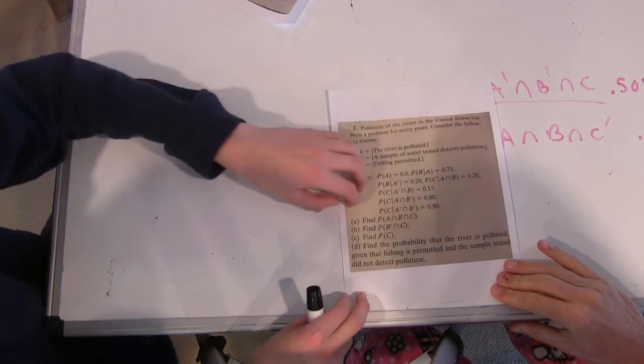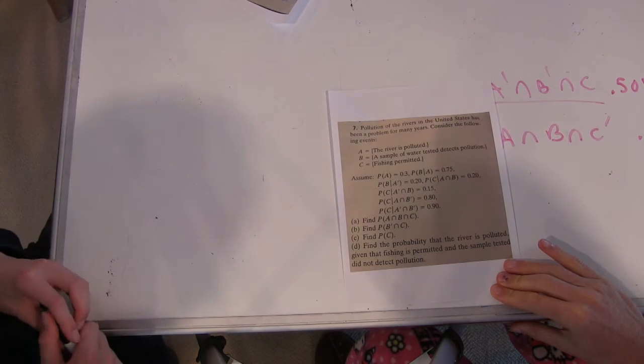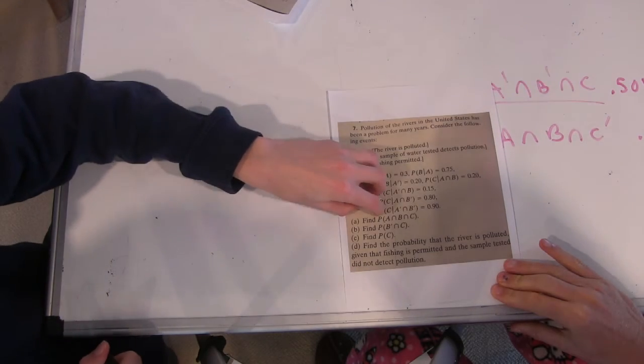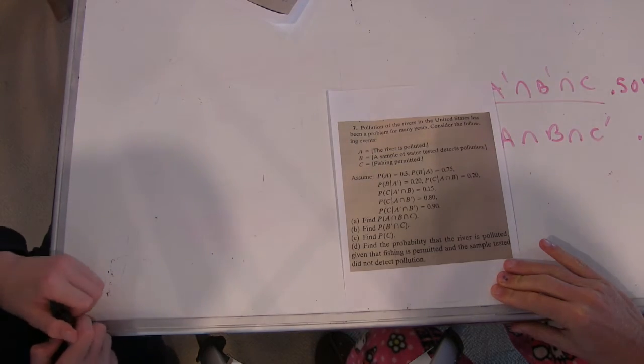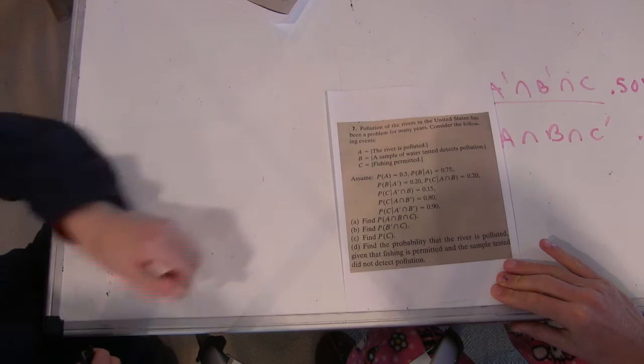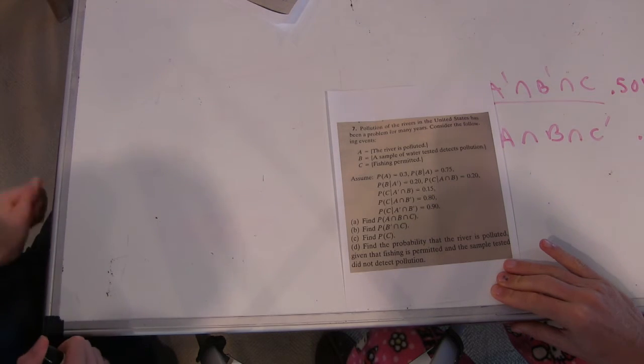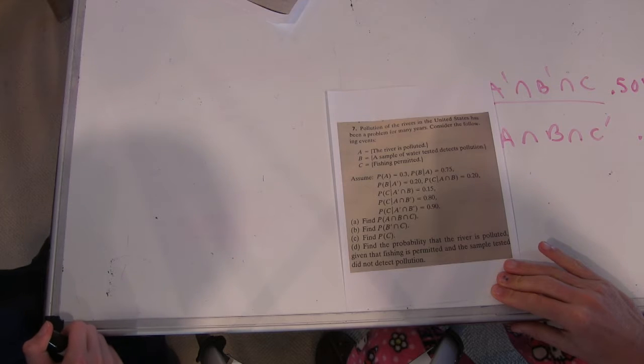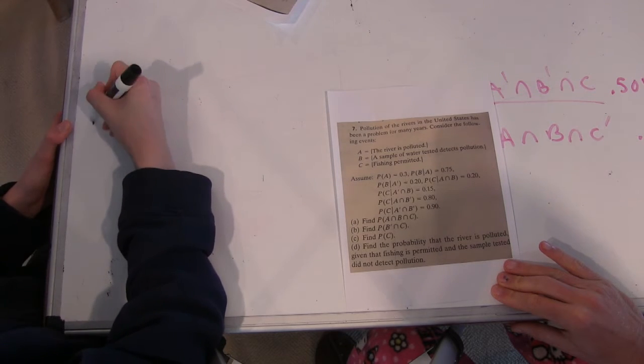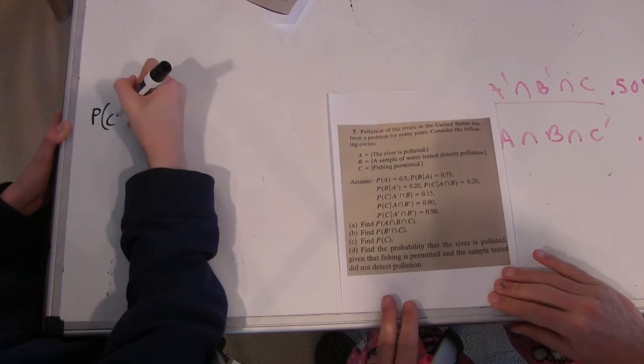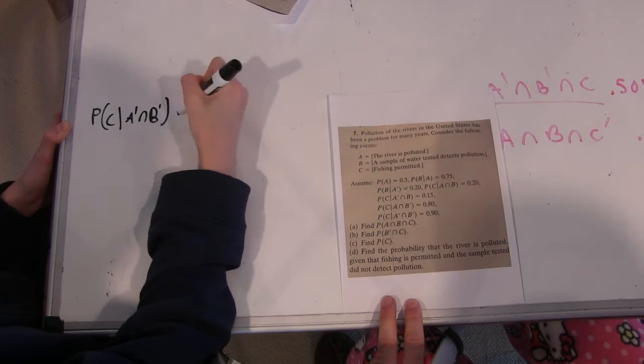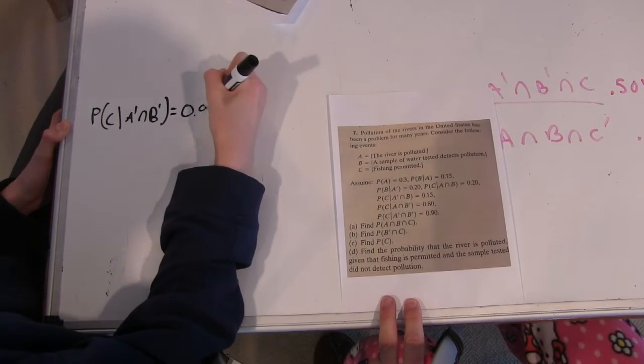So just looking at this information, out of these probabilities here, these 1, 2, 3, 4, which are going to be useful in finding the individual sections, it looks like this one here is going to be what we are going to focus on, because it's probability of C given A prime intersect B prime is 0.9. So we have P, C given A prime intersect B prime is 0.9.